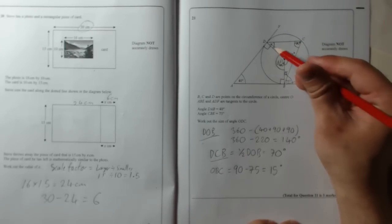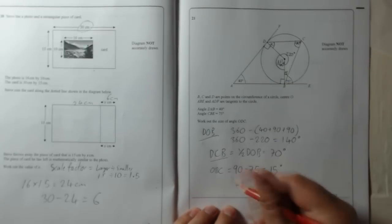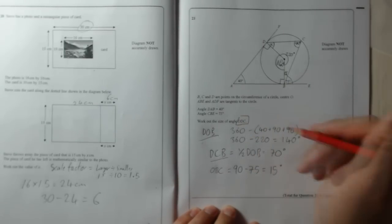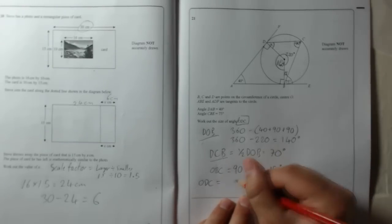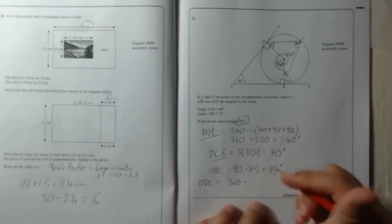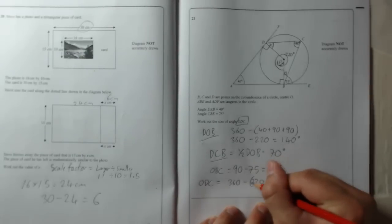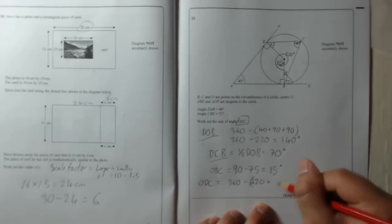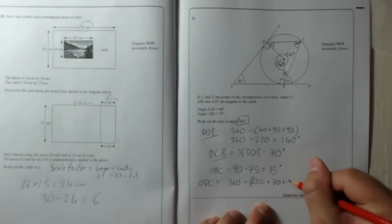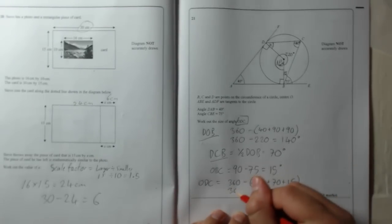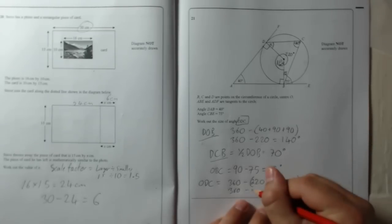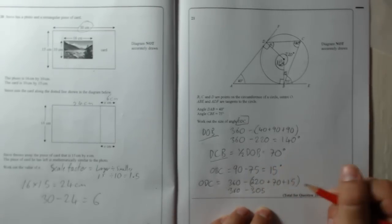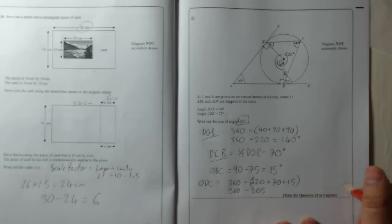So we've got 15, 220, 70, and whatever X is. So X, which was ODC, is equal to 360 take away the other angles added up: 220 plus 70 plus 15, which is 360 take away 220, 290, 305, which is 455 degrees.